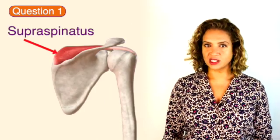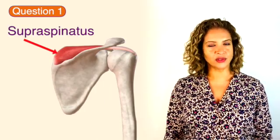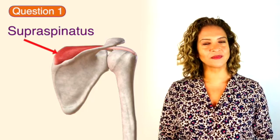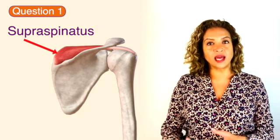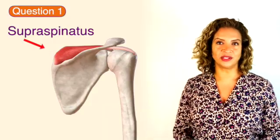This muscle attaches to the anterior aspect of the greater tuberosity of the humerus. It works by elevating and abducting the arm away from the body.